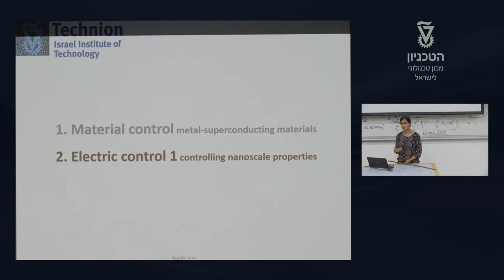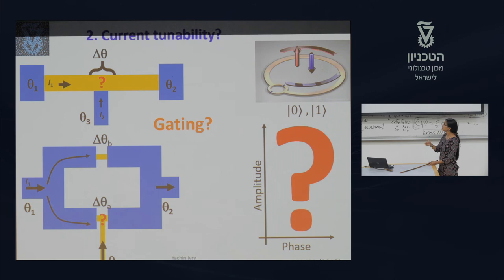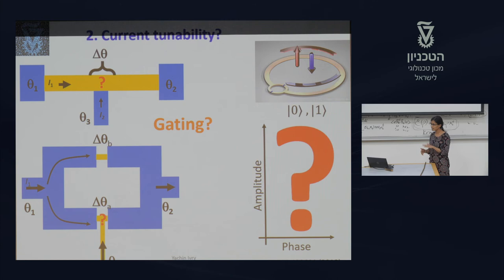Can we also tune superconducting devices by electrical means? If we want to integrate a superconducting material with existing electronic devices, we need to try other means like applying current or voltage. We take a Josephson junction in a different configuration — putting another material and applying current externally — to see if we can tune it.